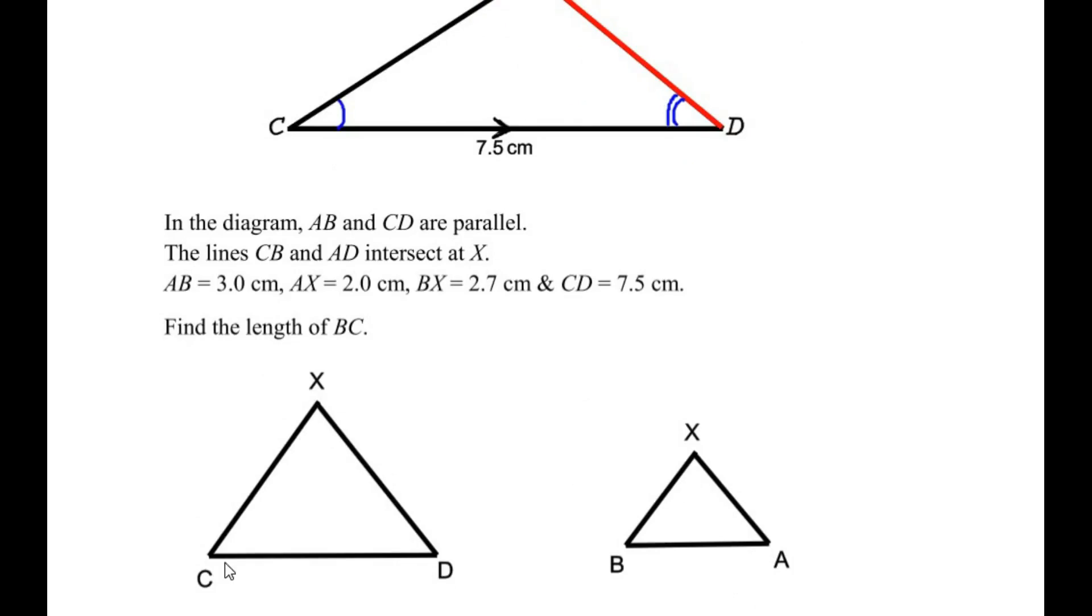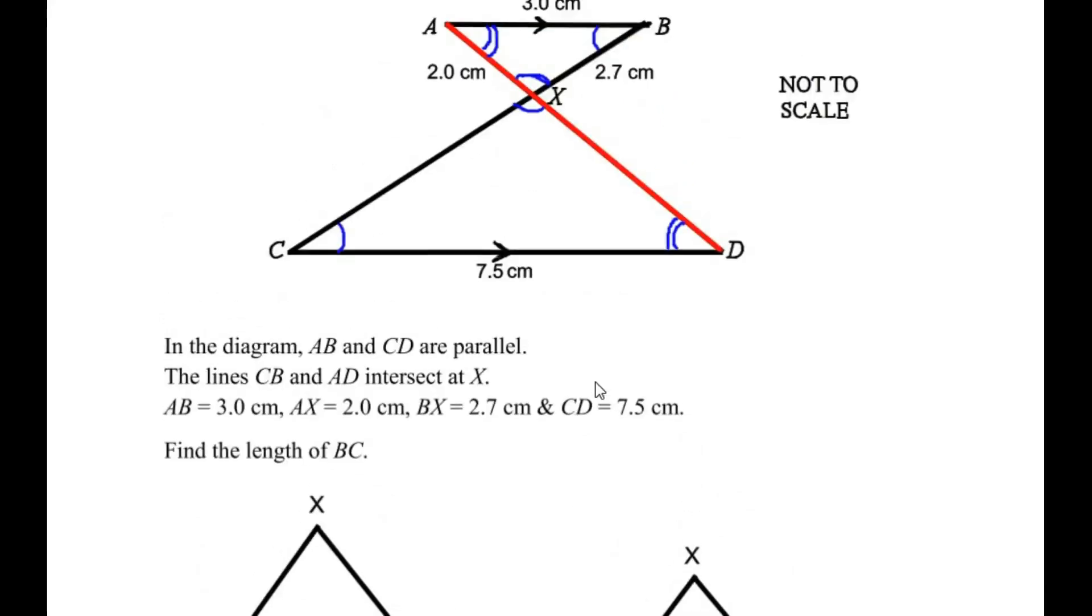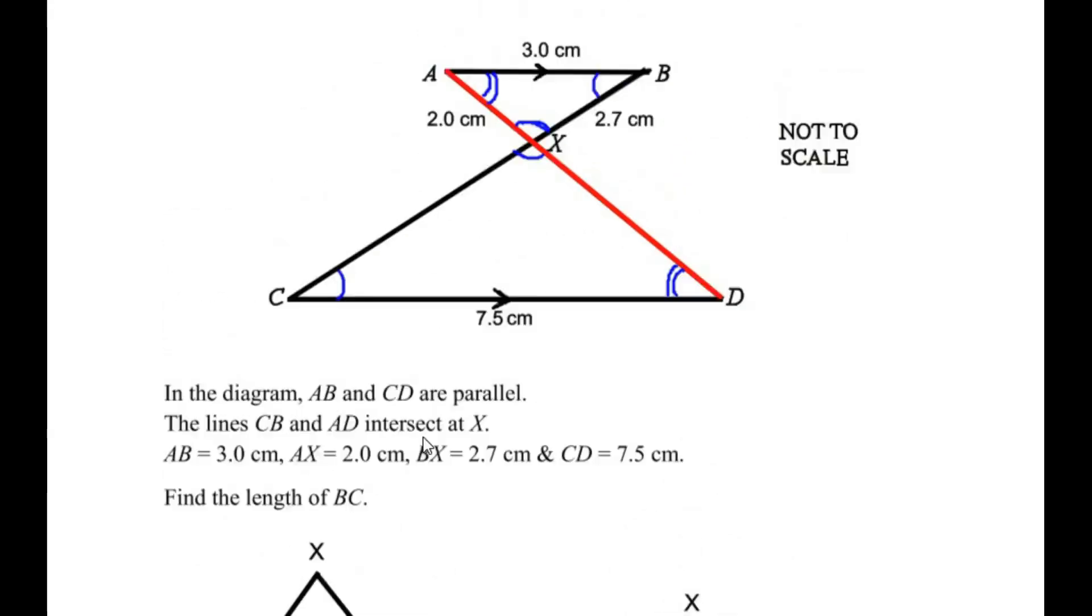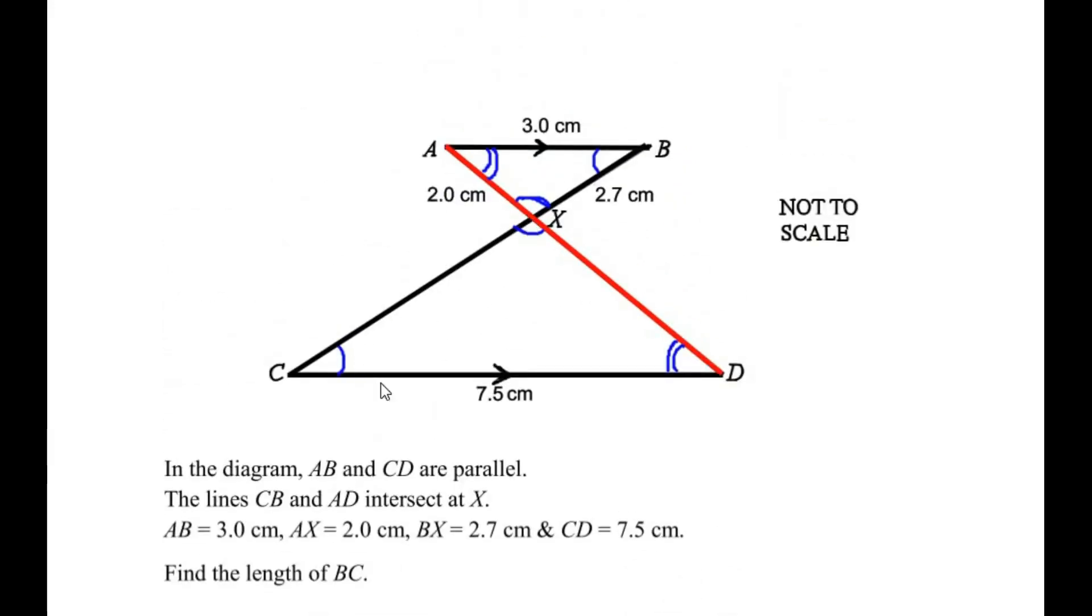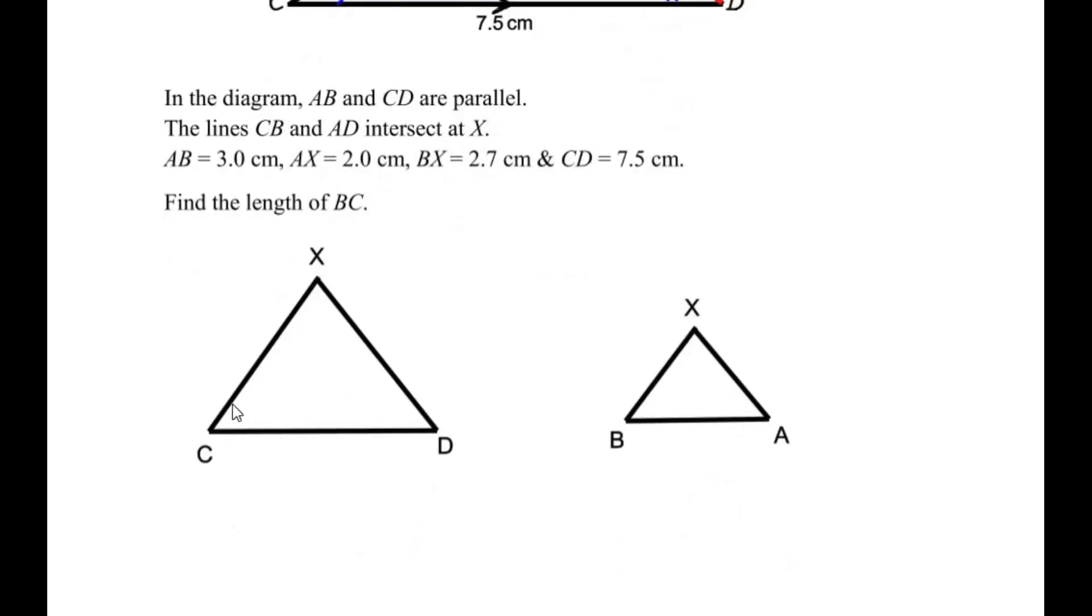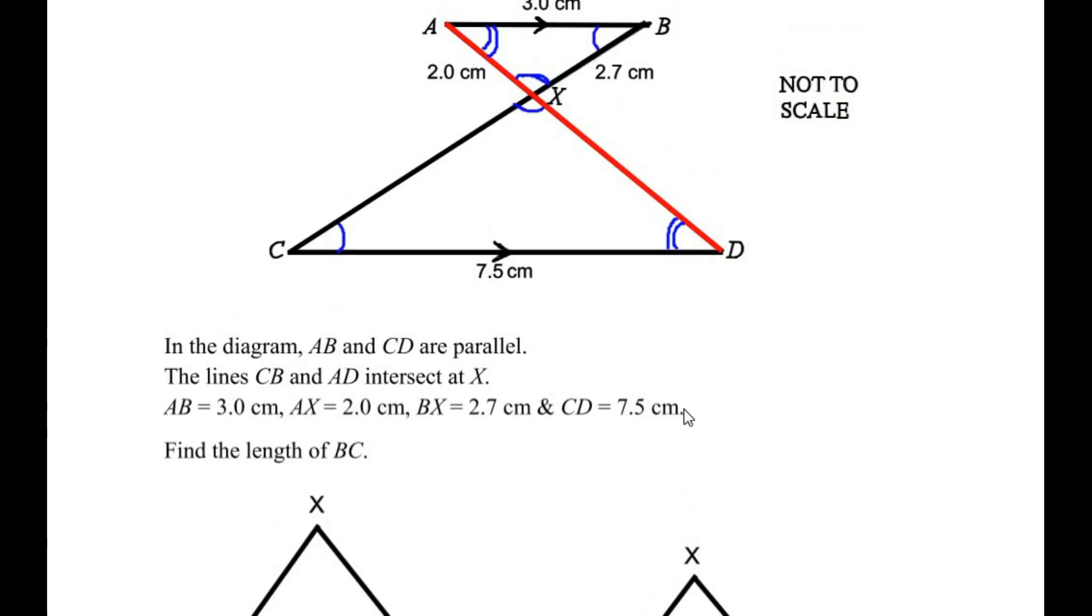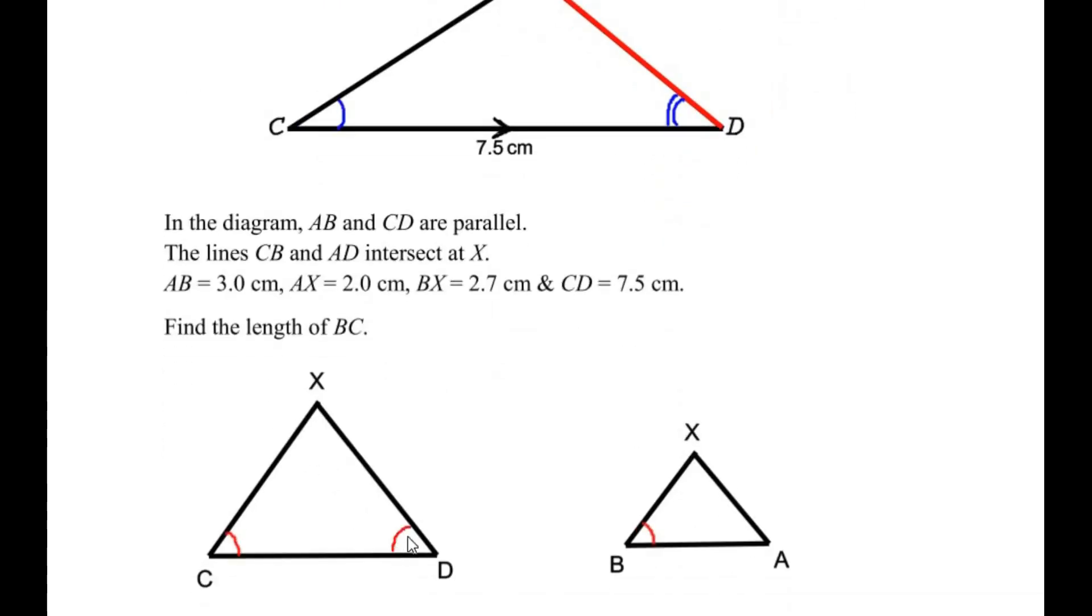Here we have the triangle XCD and the small triangle XAB. Accordingly, we have angle B equal to angle C, so let us mark angle B equal to angle C. Angle A was equal to angle D, so let us mark angle D equal to angle A. And angle X is equal to angle X.